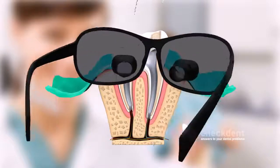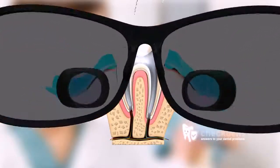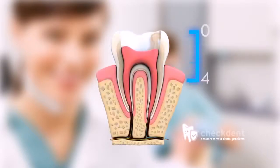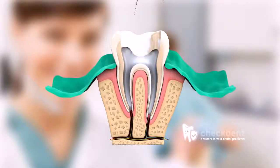The dental canal must be reconditioned all the way to the root apex. The length of the root is ascertained by means of x-rays and measuring aids. Only a well-conditioned tooth filled all the way to the root apex can be preserved permanently.